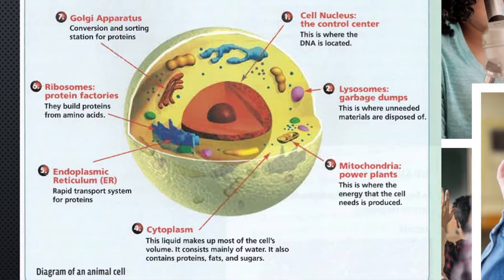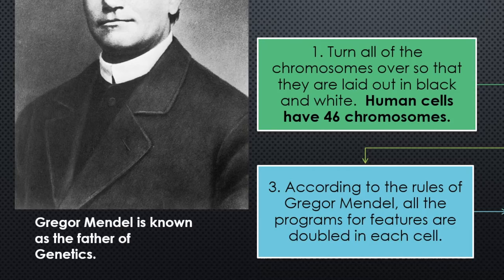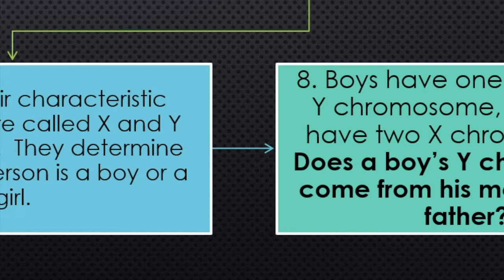Gregor Mendel is known as the father of genetics. Human cells have 46 chromosomes. According to the rules of Gregor Mendel, all the programs for features are doubled in each cell. When examining chromosomes, due to their characteristics and shape, they are called X and Y chromosomes. Boys have one X and one Y chromosome. Girls have two X chromosomes.